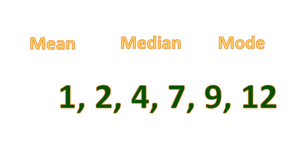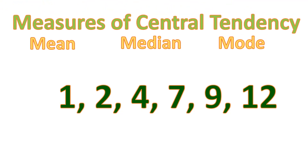So what does it mean by these three? What does it mean if you are tasked to find the mean, median, and mode of a set of numbers or data? These three are what you call measures of central tendency. They are called measures of central tendency because they are telling you what is the value of the center of the set of data.